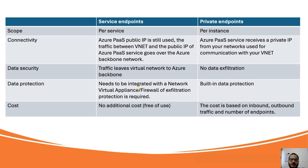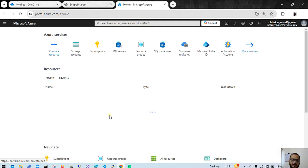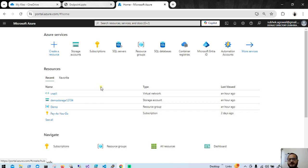It basically depends completely on your requirement and your scenario - what kind of services you need to use in your project or application. If you are using multiple resources of a service, I would say use a service endpoint as it will cost you less. If you are using just one resource of a particular service, then use a private endpoint. I will create a separate demo video on service endpoint and private endpoint where we will create a virtual machine and a storage account and see how to connect from a virtual machine to the storage account using a storage explorer.